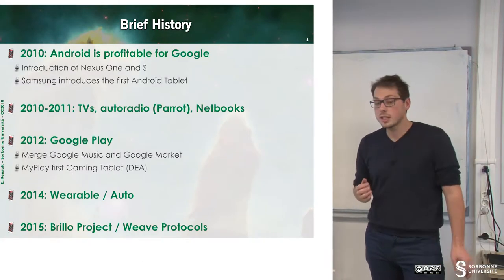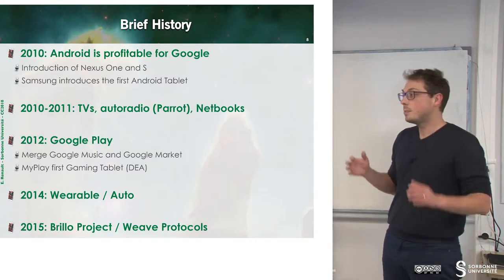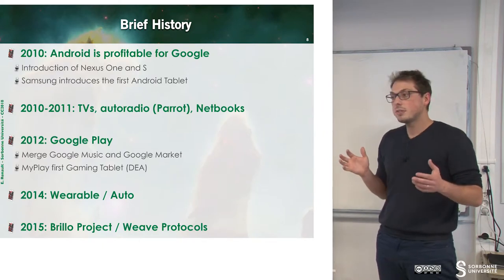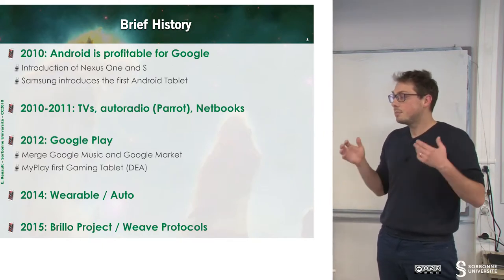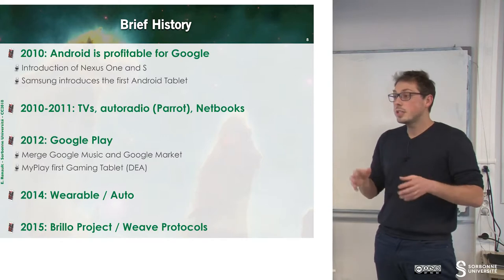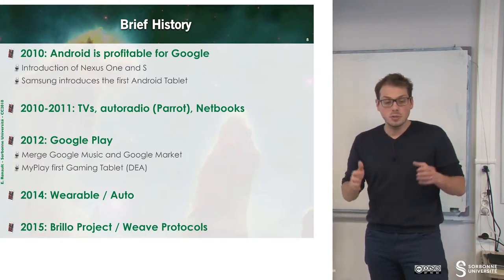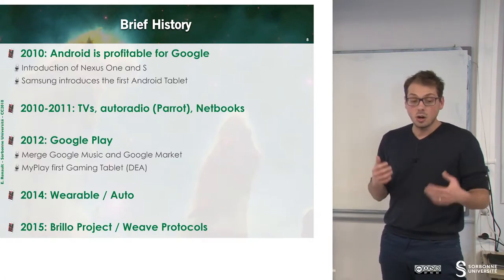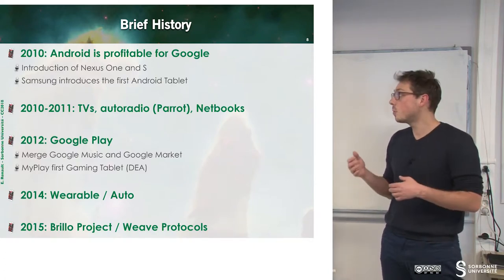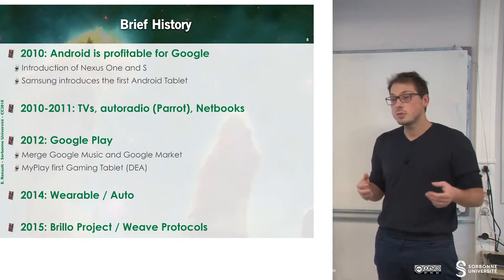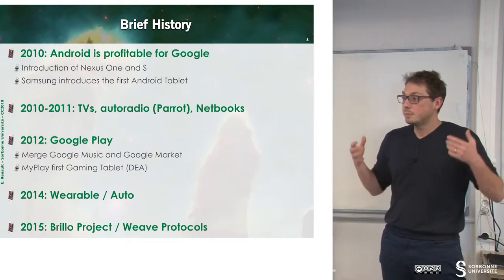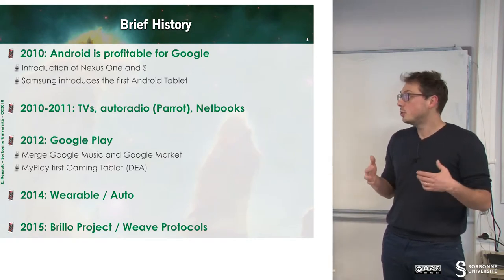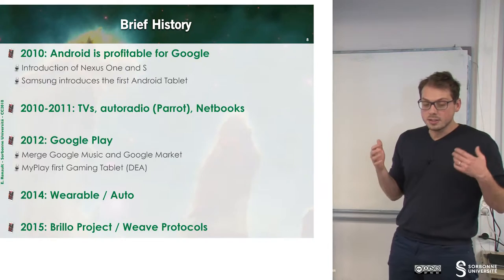In 2010, Android became profitable for Google — just around seven years after it was acquired. Starting from this, Google decided to make profits with Android and they released their own phones, Nexus One and Nexus S. Samsung, a major actor in Android, also decided to release its first phone and its first tablet.